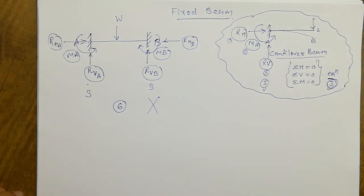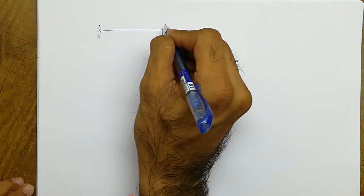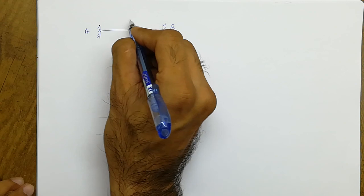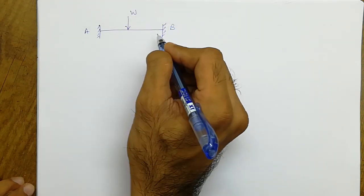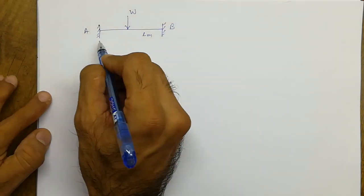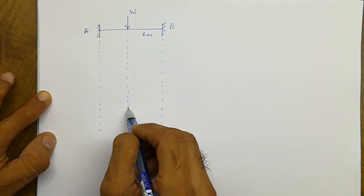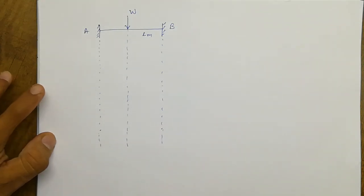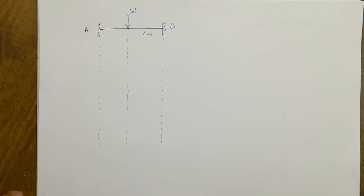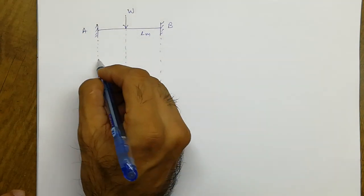So let me take one example of a fixed beam — beam AB subjected to point load W at mid-span with span L meters. Now we are going to solve this beam. Whenever we have a problem which is a little bit complex, we try to make it simple. So here we will work with this beam.